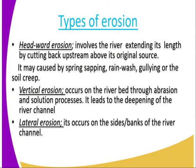Then we look at the different types of erosion — we have three of them. The first one is headward erosion. When we talk about headward erosion, it involves the river extending its way by cutting back upstream above its original source. It may be caused by spring sapping, rain wash, gully erosion, or even soil creep. This is when the river is retreating backward, upstream, cutting from the source backwards.